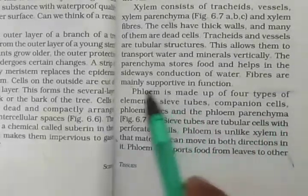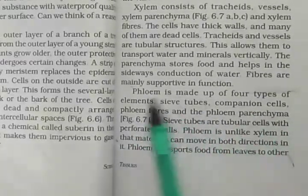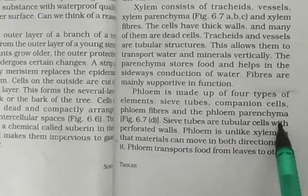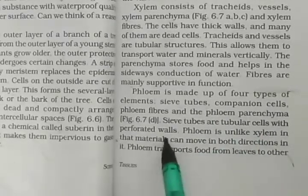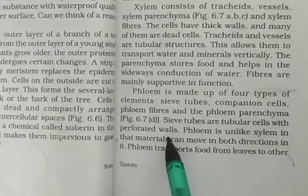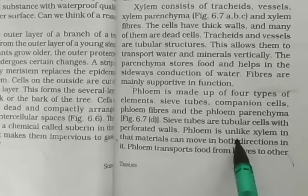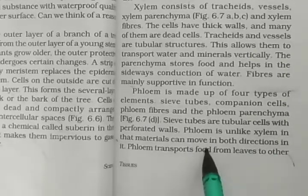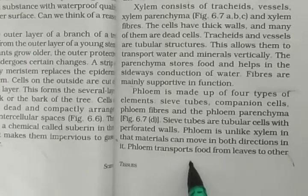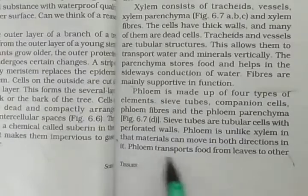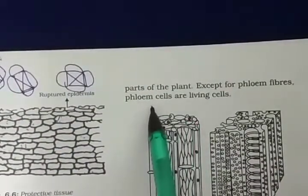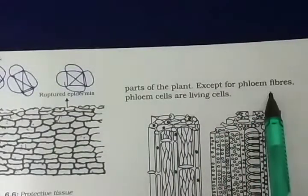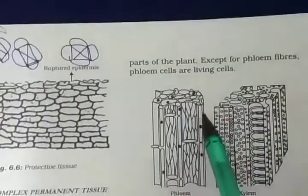Phloem is made up of four types of elements: sieve tubes, companion cells, phloem fibers, and phloem parenchyma. Sieve tubes are tubular cells with perforated walls. Phloem, unlike xylem, can move materials in both directions. Phloem transports food from leaves to other parts of the plant. Except for phloem fibers, phloem cells are living cells.